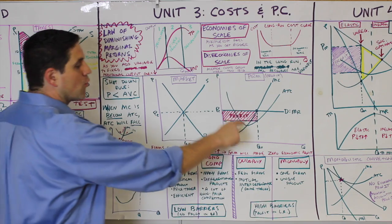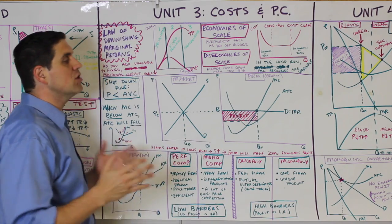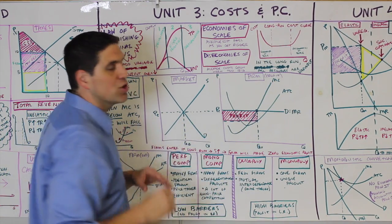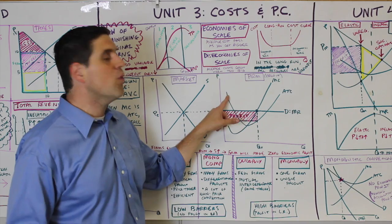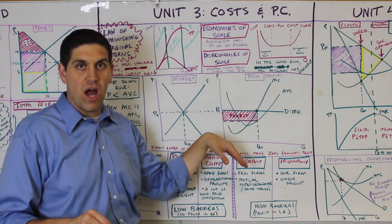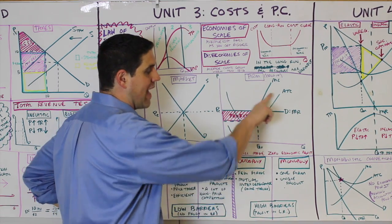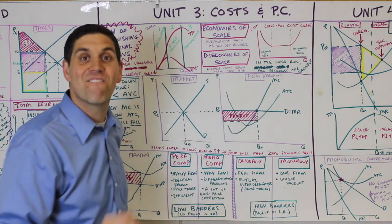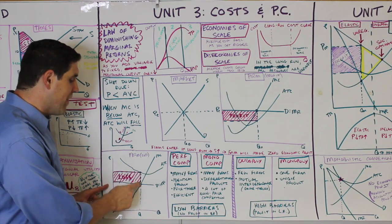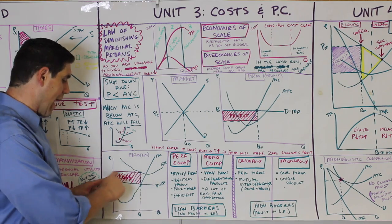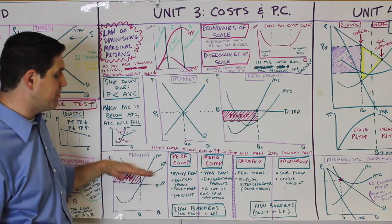A couple of things to remember: the shutdown rule is minimum AVC, not ATC. The marginal cost curve is a supply curve, but only the portion above AVC. Also, when marginal cost is below average total cost, it pulls down the ATC. When marginal is above average, it pulls it back up — this applies to both ATC and AVC. A firm making a loss: produce where MR equals MC, but ATC is above, so there's a loss box. Firms would leave, supply shifts left, and price rises back to long-run equilibrium.